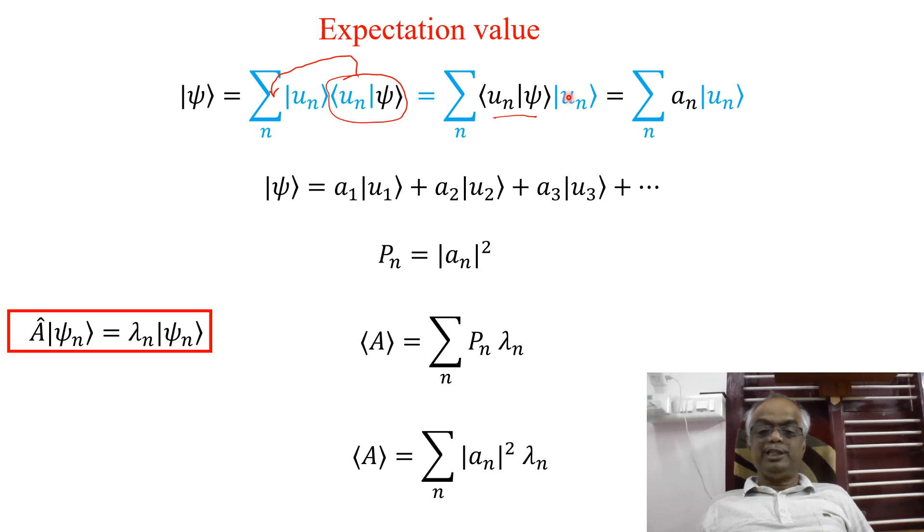If it is operator, I cannot bring back and forth here. Since it is a number, I can bring back and forth. So now you have the inner product of UN with Psi. I brought in front of the wave vector UN. So what is this? This is basically how much projection UN has over Psi. So that projection value is equal to AN. So this will become the summation over AN UN. So Psi can be written as A1U1 plus A2U2 plus A3U3 and so on.